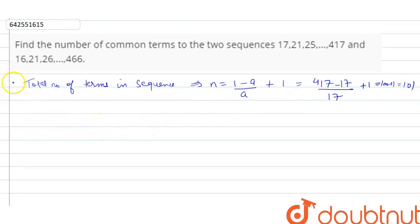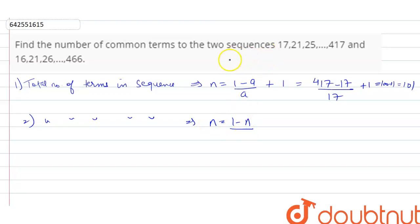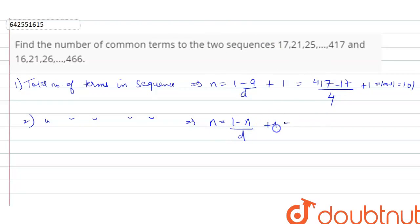For the second sequence, the total number of terms is n = (l - a) / d + 1 = (466 - 16) / 5 + 1 = 91.